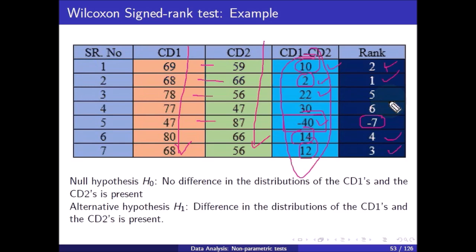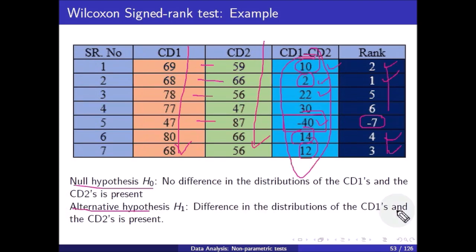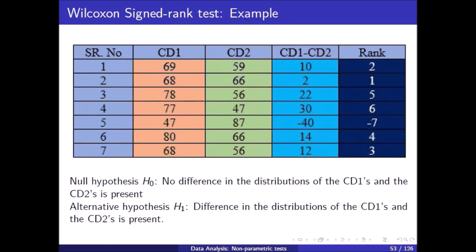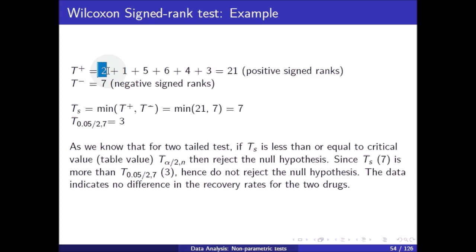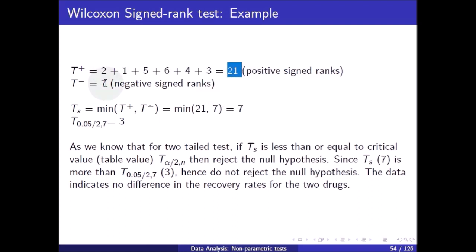The null hypothesis is no difference in the distribution of D1 and D2 recovery rates, and the alternative hypothesis is that a difference exists. The sum of positive ranks T plus = 21 and the sum of negative ranks T minus = 7, so T_s = minimum of 21 and 7 = 7.